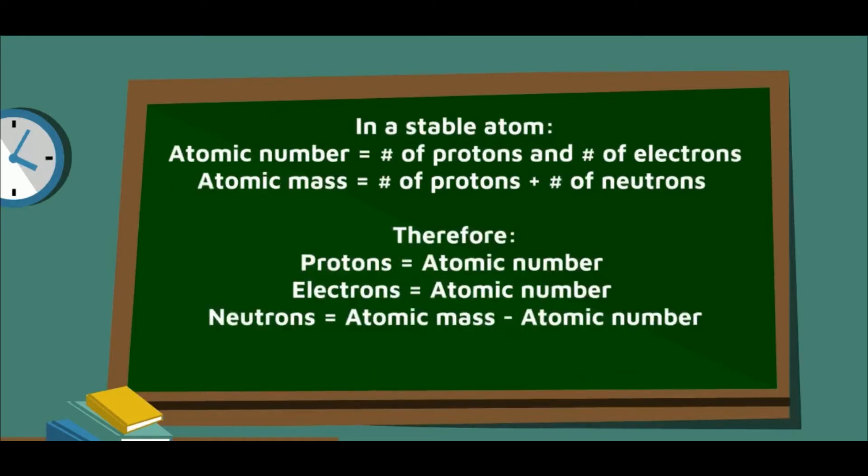The key information we need while drawing a Bohr-Rutherford Diagram is the number of protons, electrons, and neutrons. Protons and electrons equal the atomic number, while neutrons equal the atomic mass minus the atomic number.